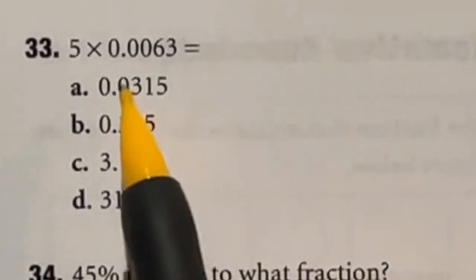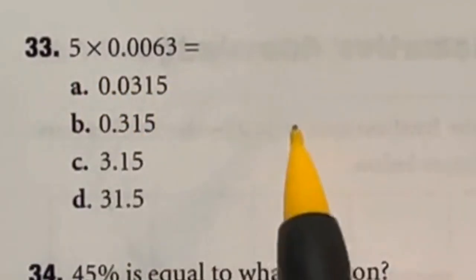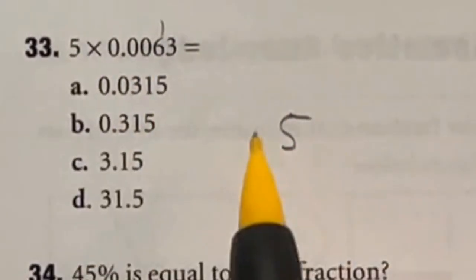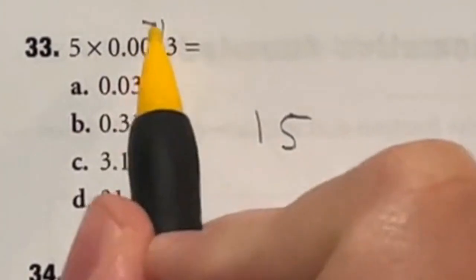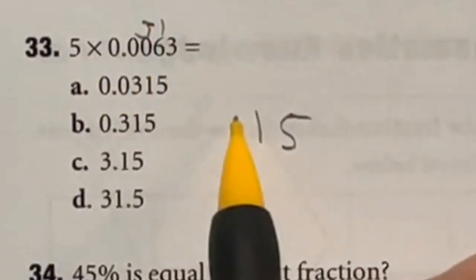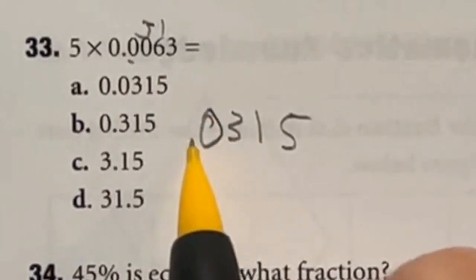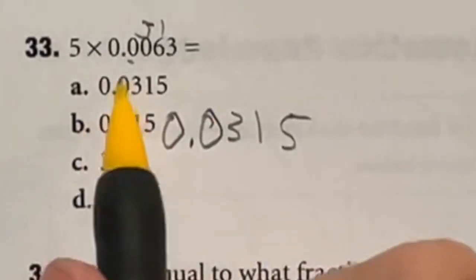So we're going to multiply from right to left here and then make sure that our decimal point lines up. So 5 times 3 is going to give us 15, but we're going to carry that 1. 5 times 6 gives me 30, but with that 1, it makes it 31, carry the 3. And then we're multiplying by 0 the rest of the way. So that 3 will come down, but so will this 0 point another 0. So looking at this, our answer is A.